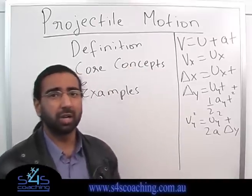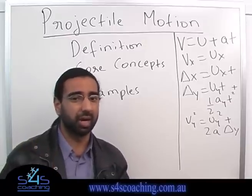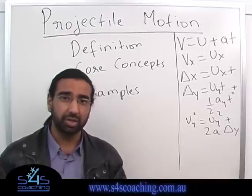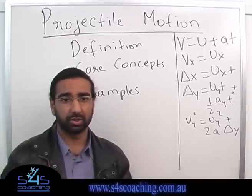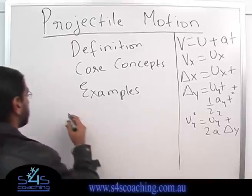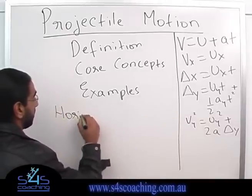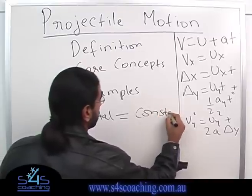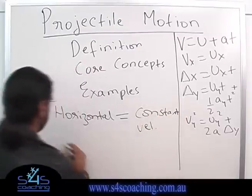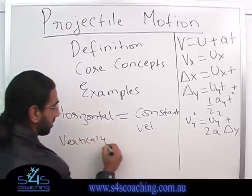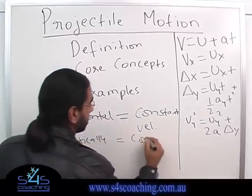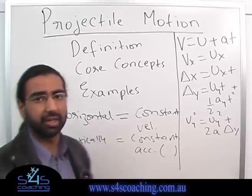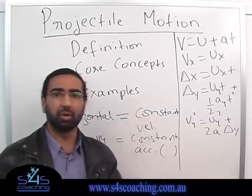Now, all projectile motion questions can be analyzed keeping two things in mind. The first thing is that because the only force acting on it is gravity, acceleration only exists in the vertical direction. So therefore, the horizontal motion is constant — it has constant velocity. And vertically, it has constant acceleration, which will be due to gravity: 9.8. It can either be positive or negative, depending on which way it's actually going.